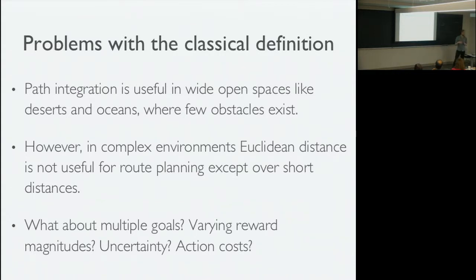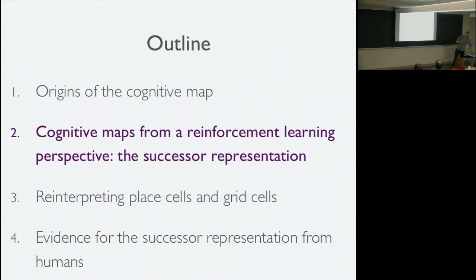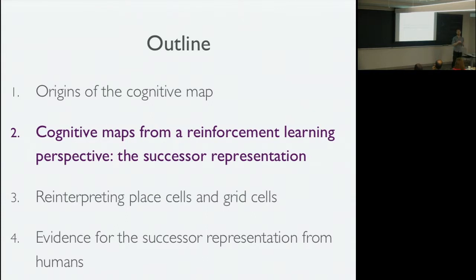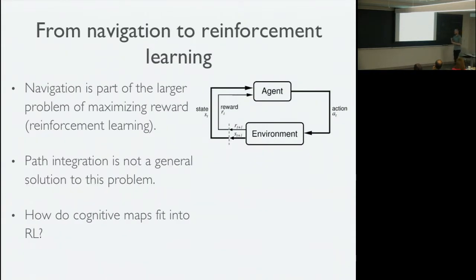There are many other issues. What about multiple goals? What if I don't just want to go from point A to point B, but plan a trajectory that maximizes cumulative reward? What if different reward locations have different magnitudes, or there's uncertainty about where I am or where the rewards are, or there are action costs like traveling up a hill? Path integration is solving a very restricted problem that doesn't correspond to the general problem most animals face in navigating the world and making decisions.